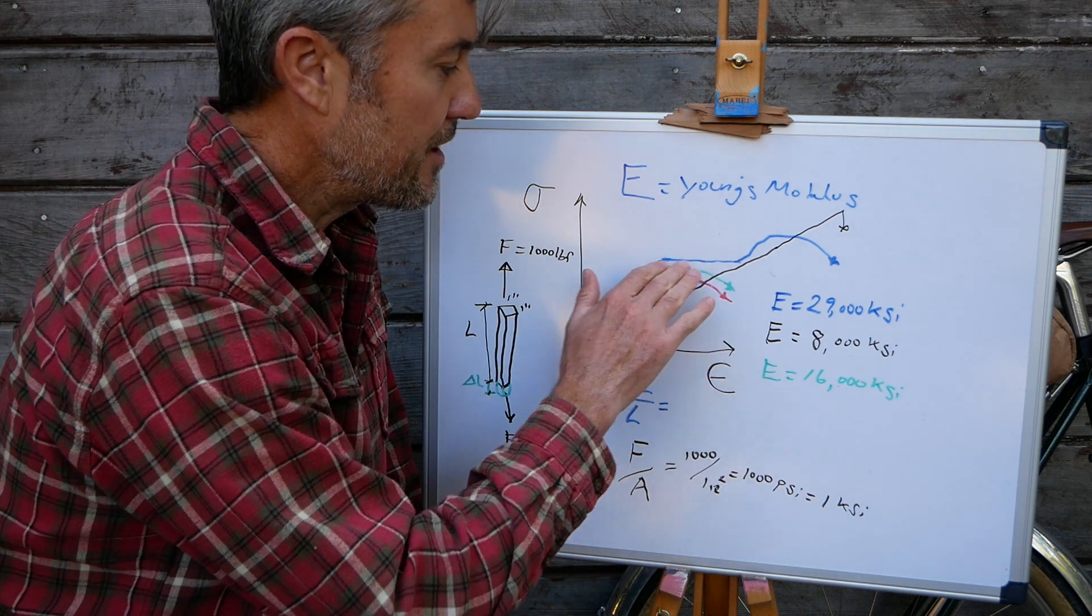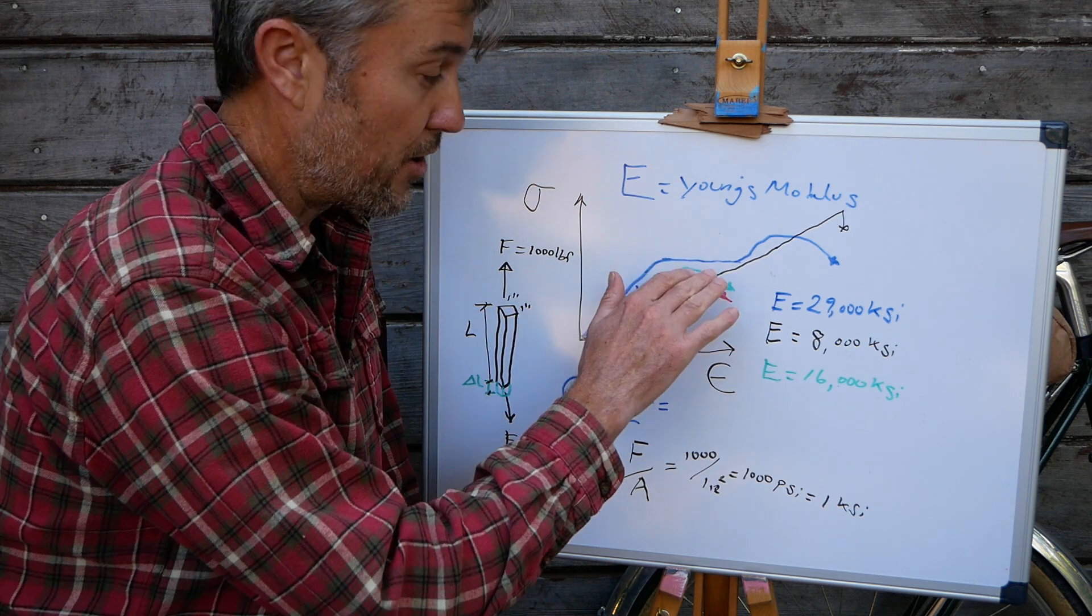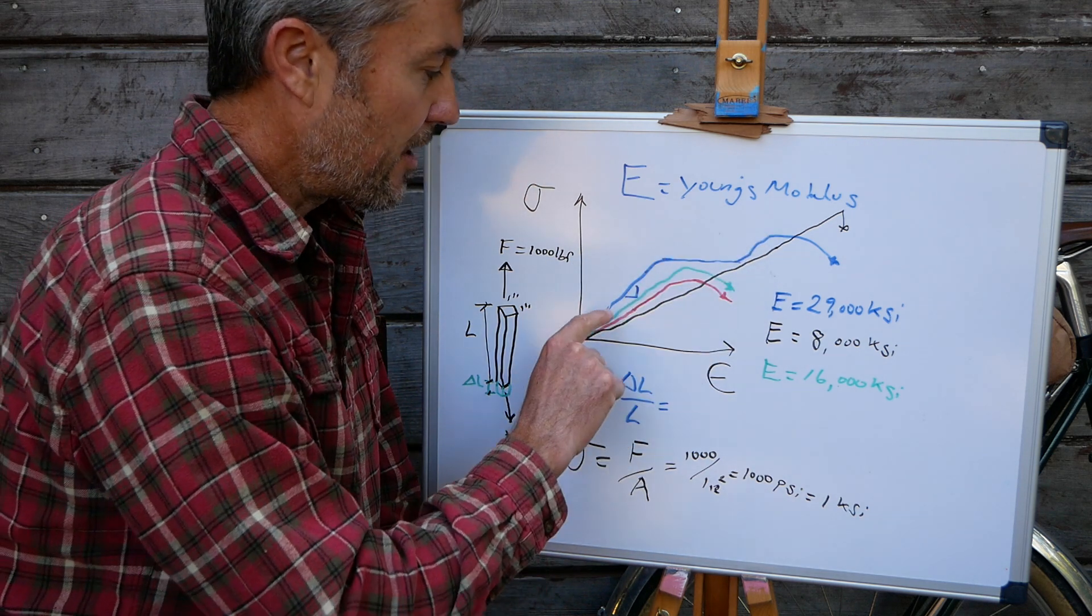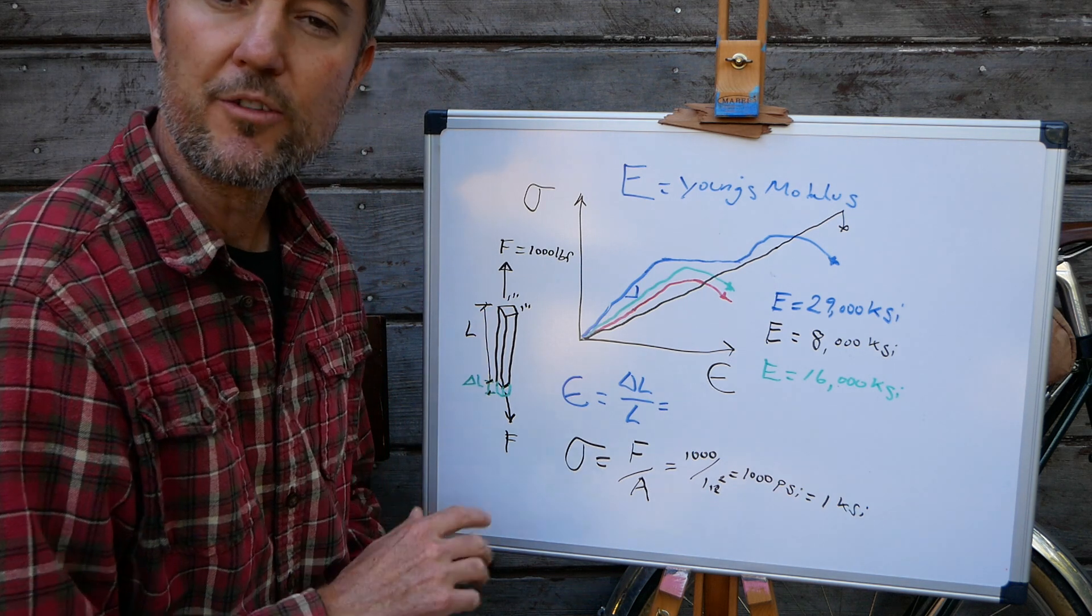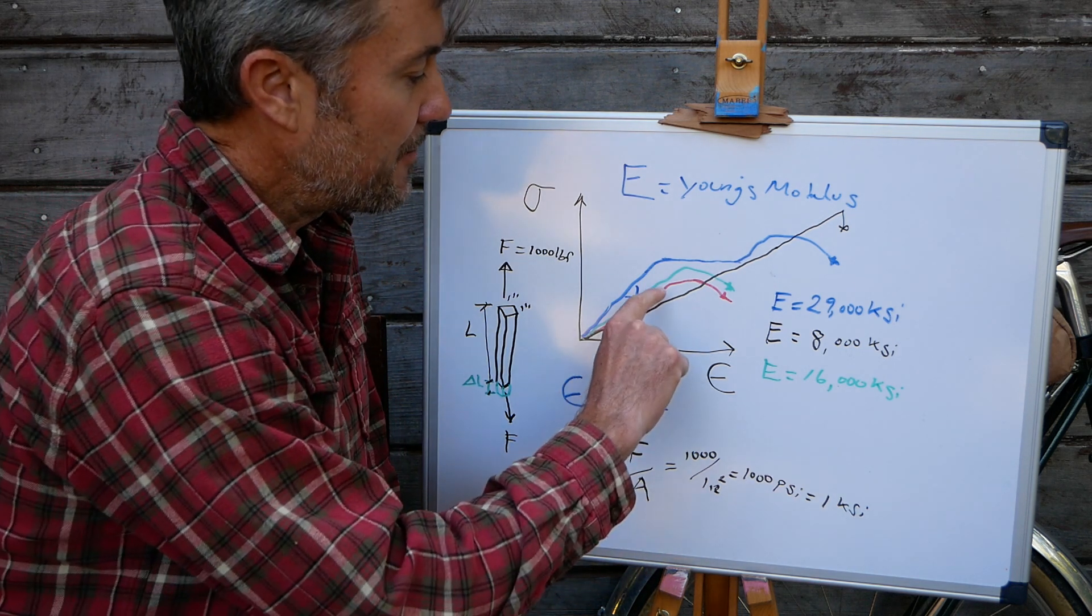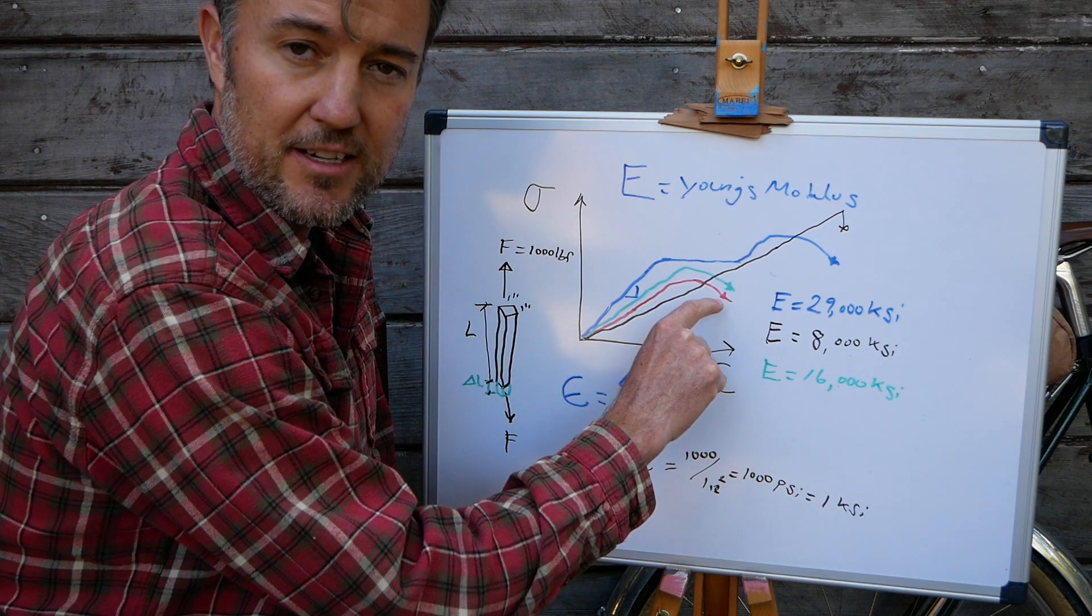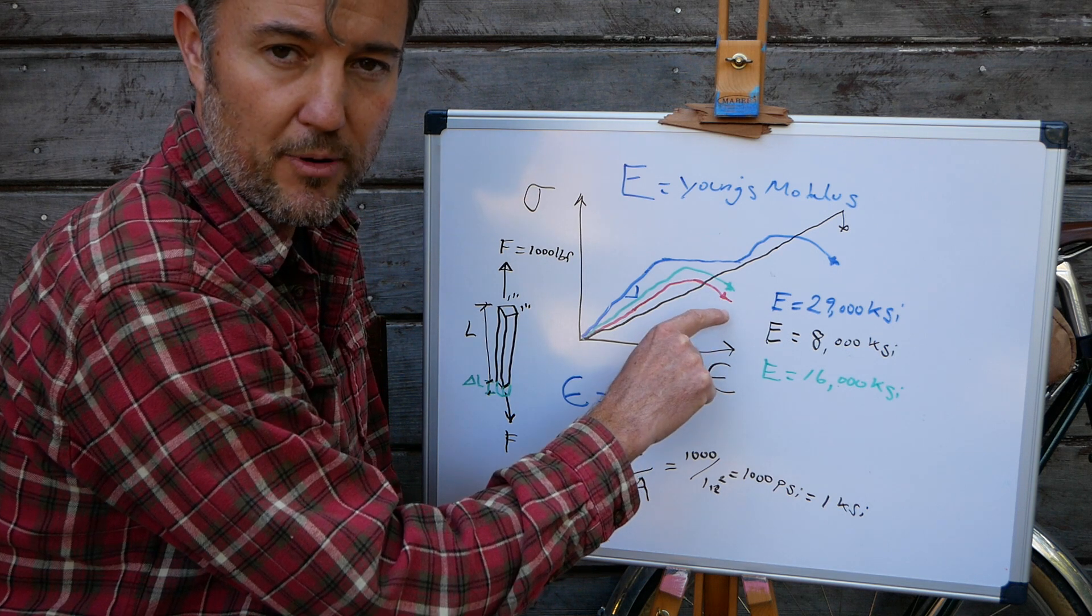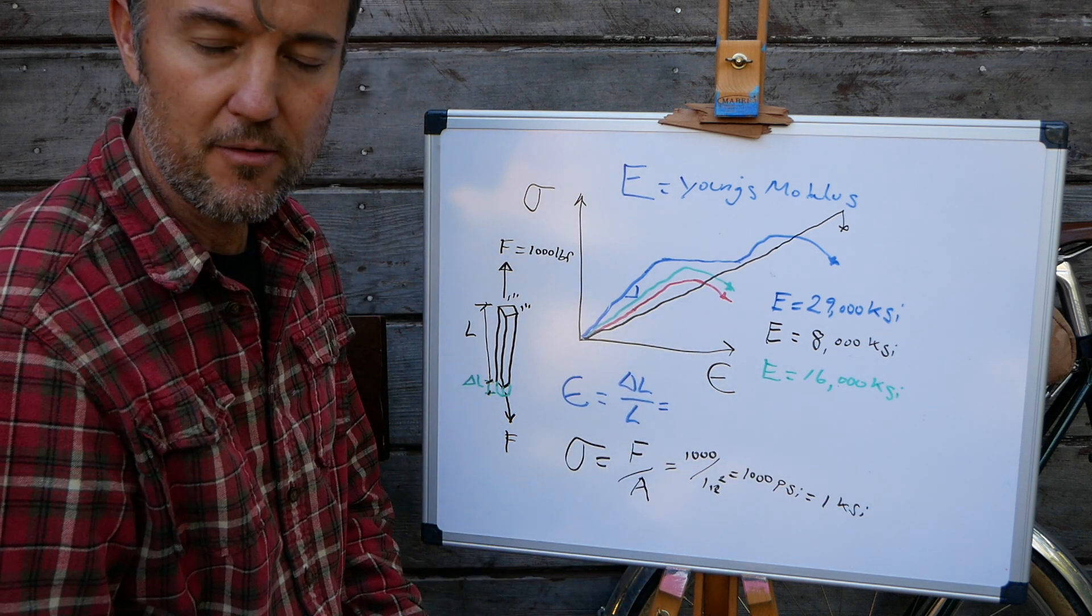So steel will give you a warning, a very, very large warning before it breaks. Whereas titanium and aluminum will not either, but they do start to bend significantly before they break. So you'll see some bending and then rupture.